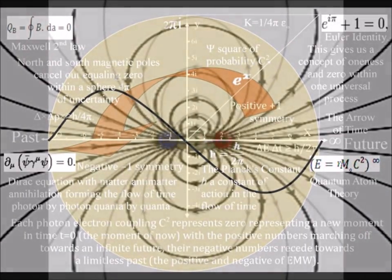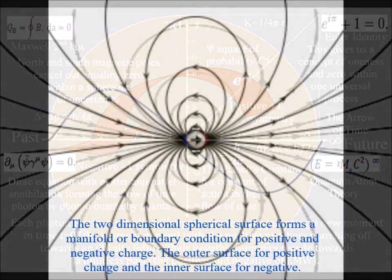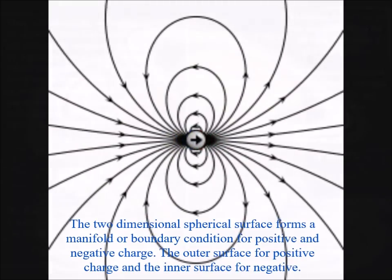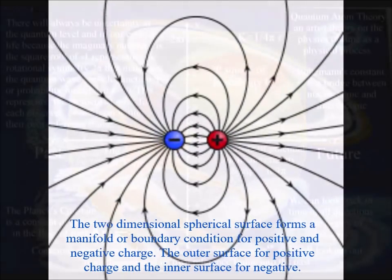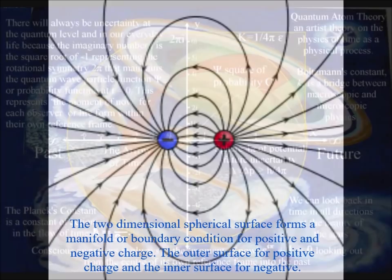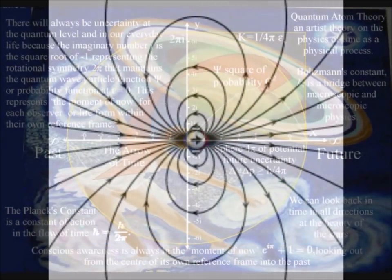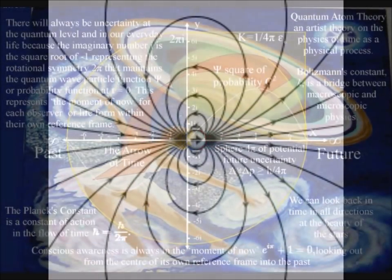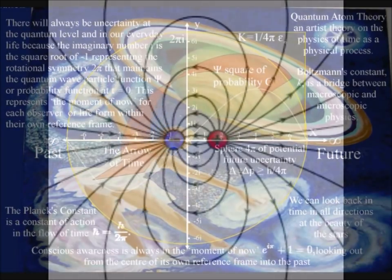This is a totally physical and universal process. It makes no difference if we use an electronic device or the surface of the human eye. Both will collapse the wave nature of light into photons representing the future unfolding within that reference frame.